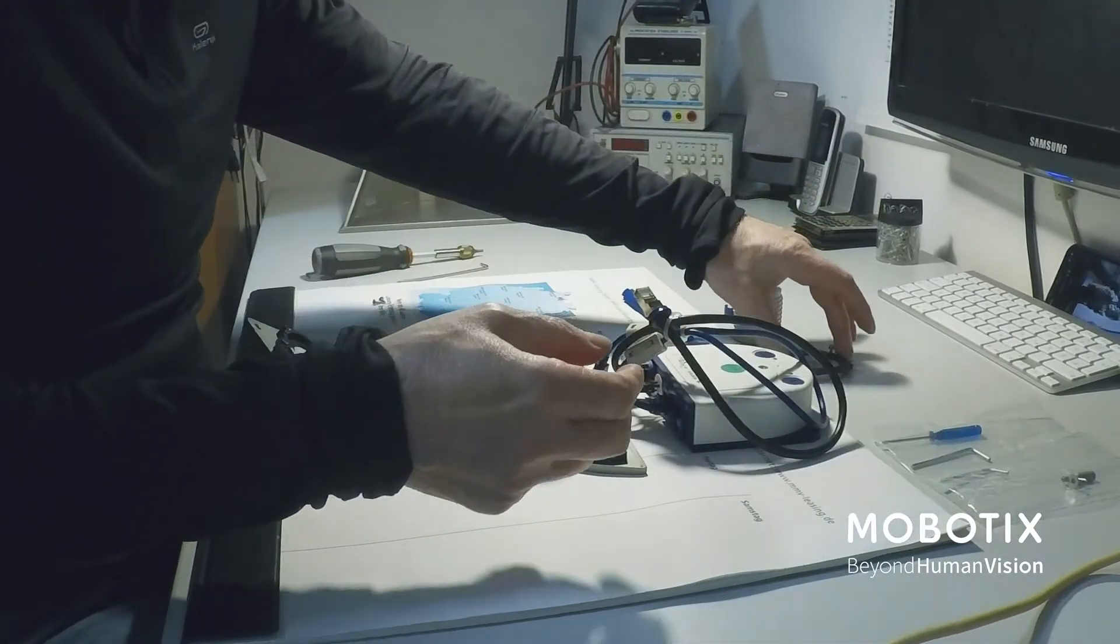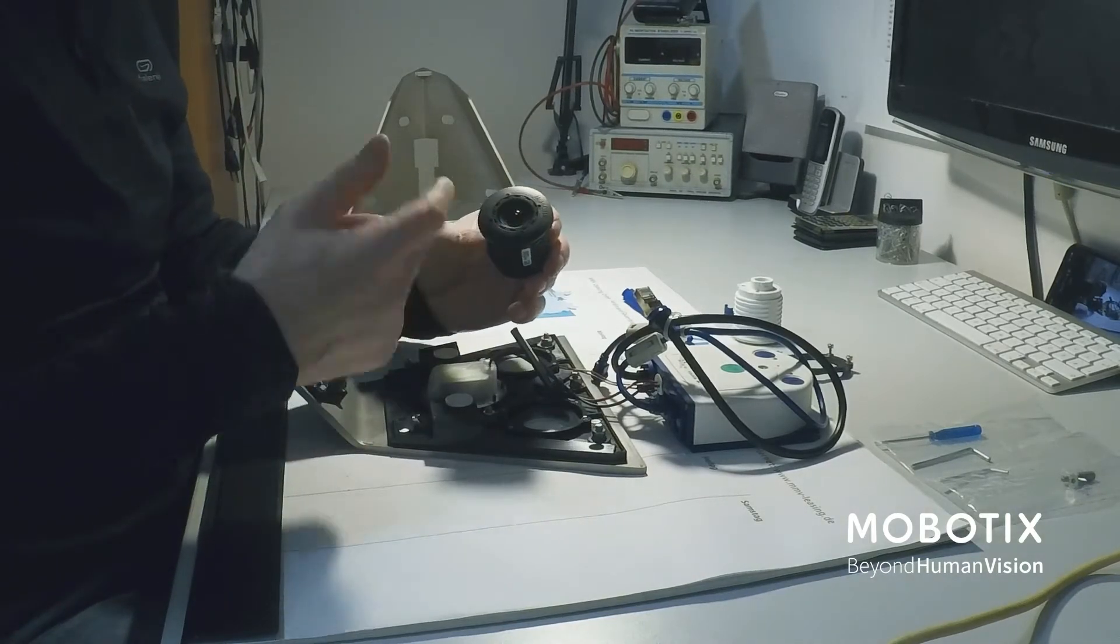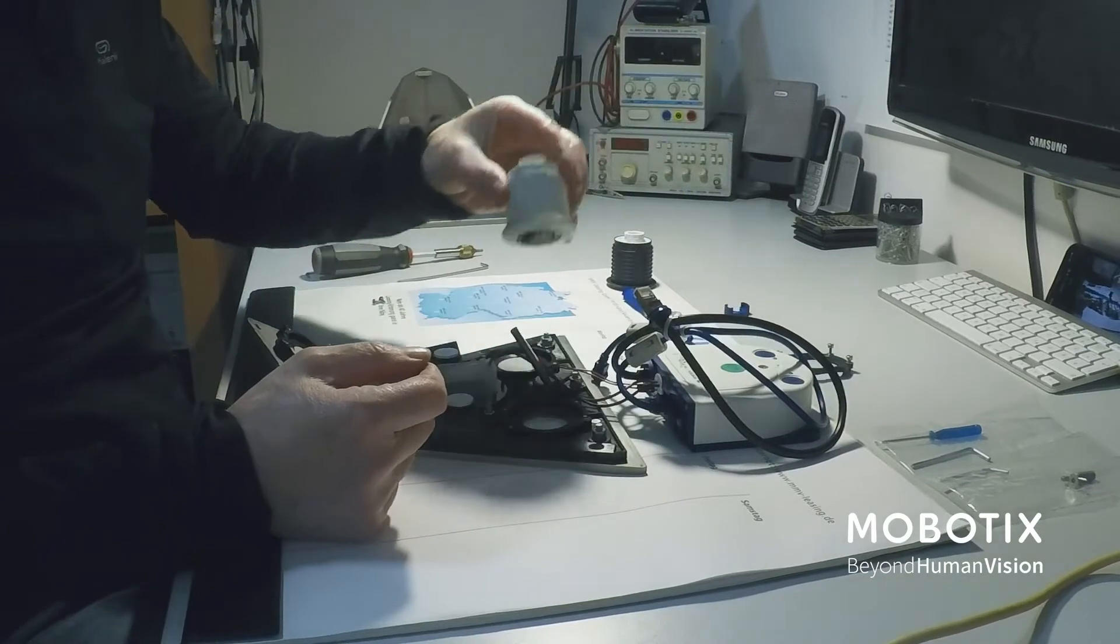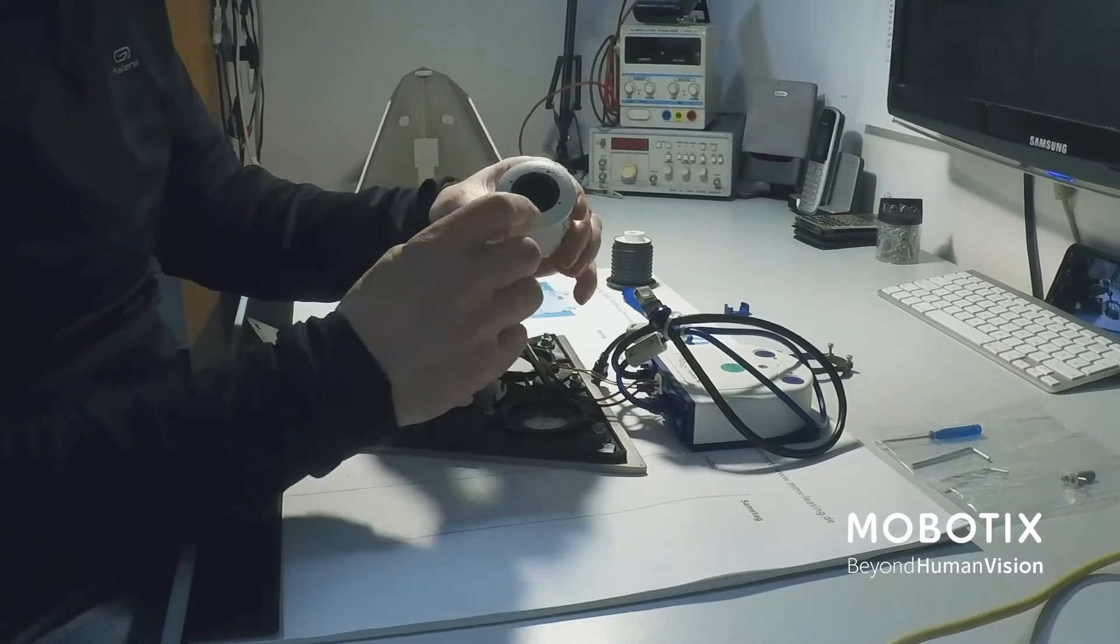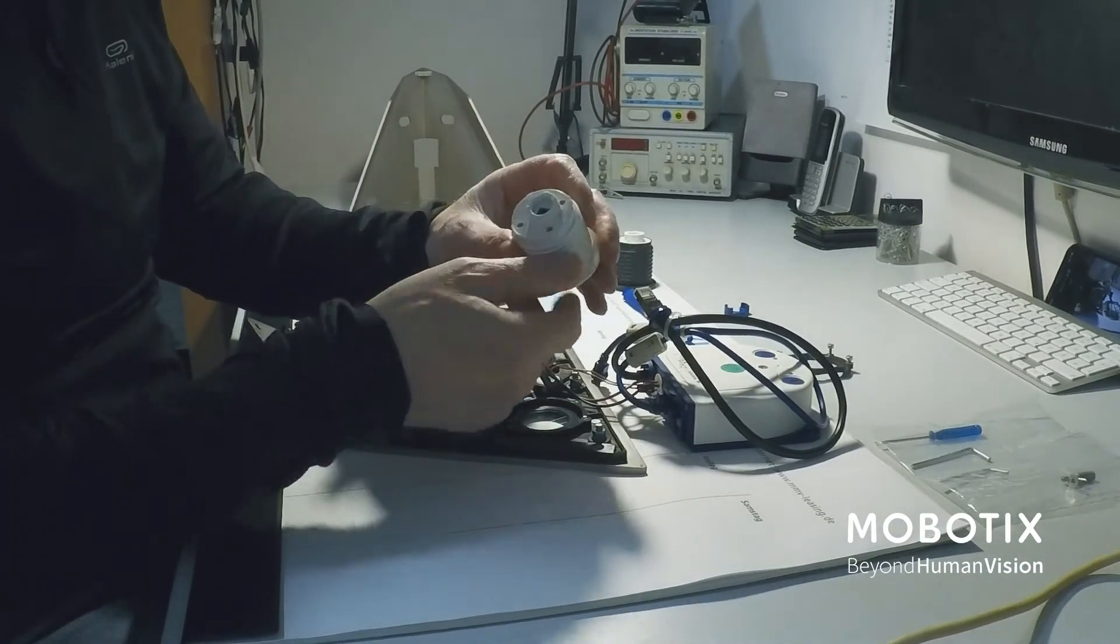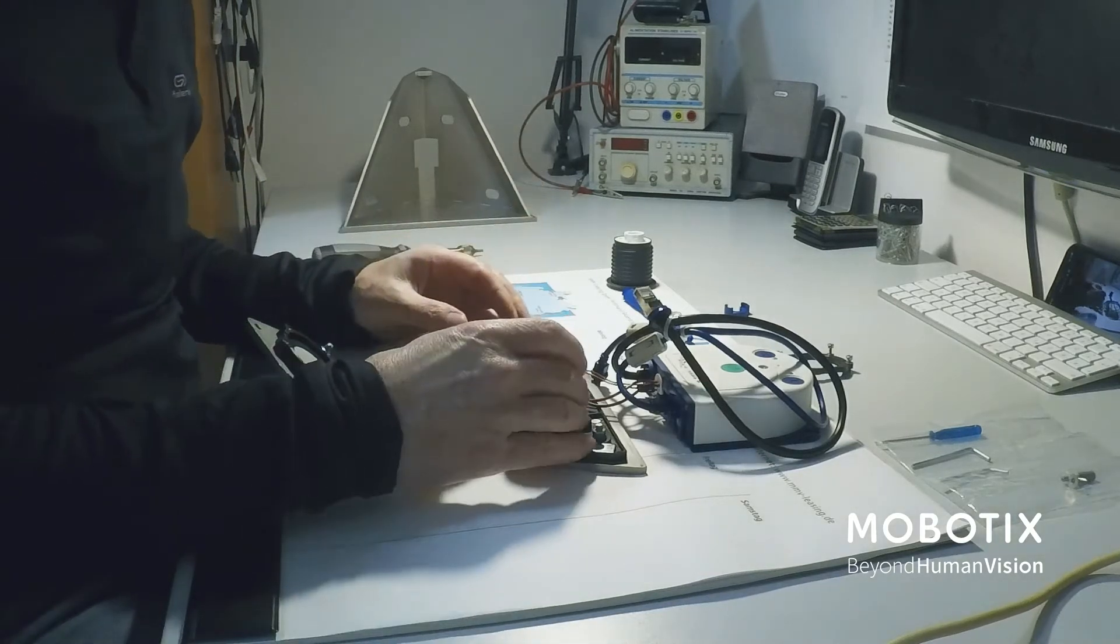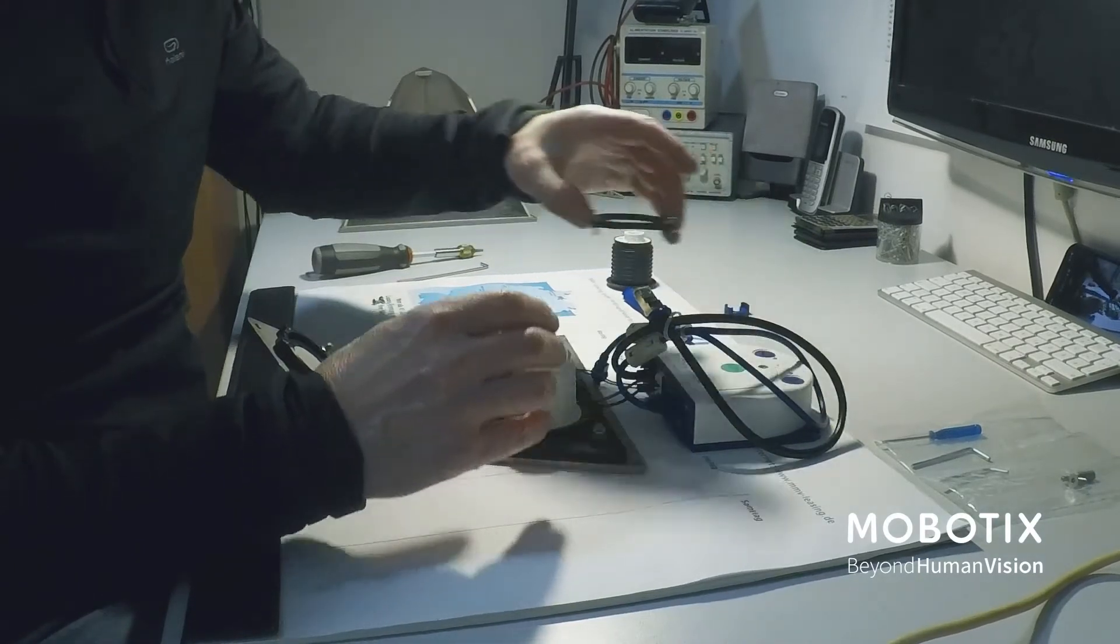So this is our image sensor. The color is not really important, actually the sensor itself is important. Here I have now another one. We just need to make sure that the direction is right. There is Mobotix printed onto the image sensor and we also see here an arrow and this arrow needs to look to above. So what we need to do is to put the image sensor in the right direction into this and then we can put our ring back.